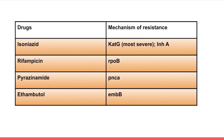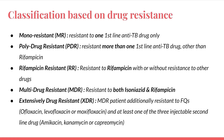Regarding mechanisms of resistance: isoniazid resistance involves katG (most severe) and inhA; rifampicin resistance involves rpoB — this is very important to remember; pyrazinamide resistance involves pncA; and ethambutol resistance involves embB. You can pick these up using the initials of each drug. rpoB for rifampicin is the most critical one to remember.